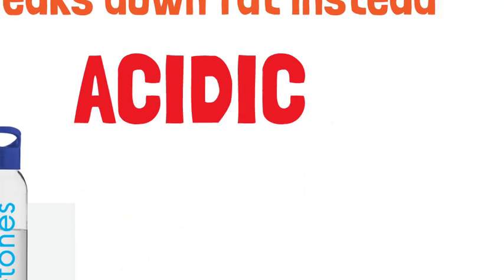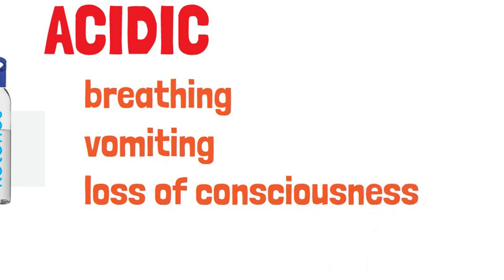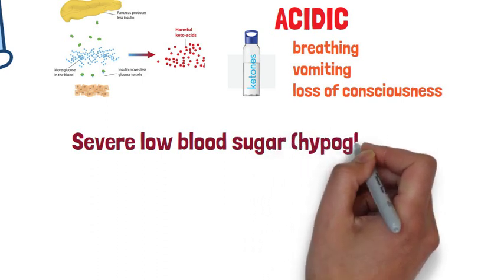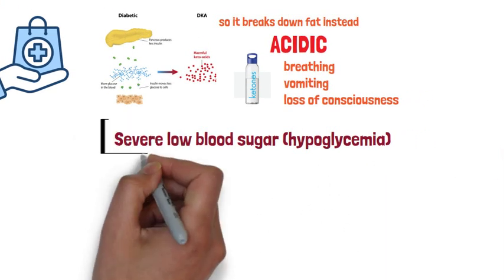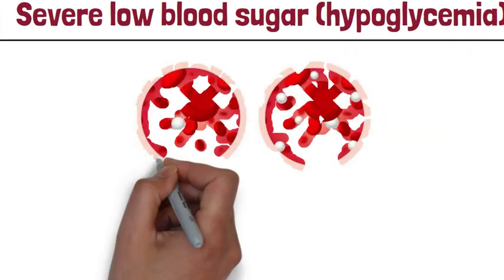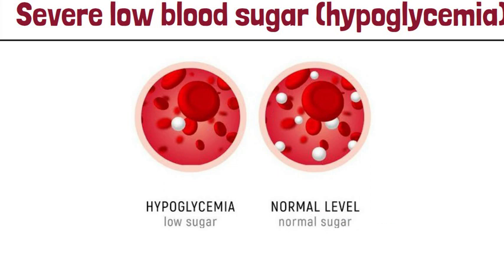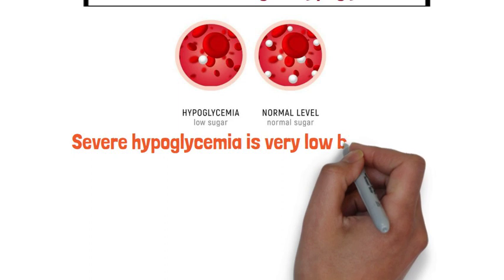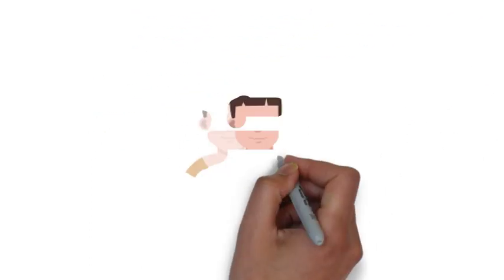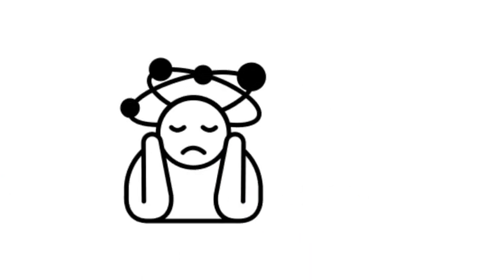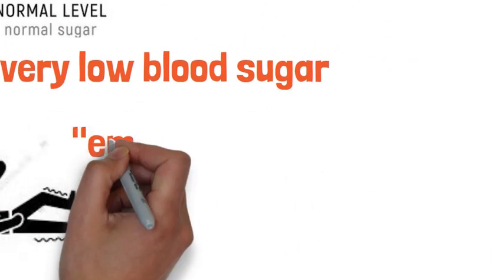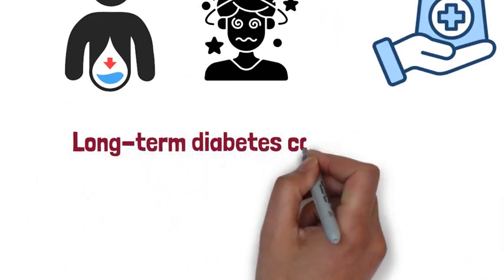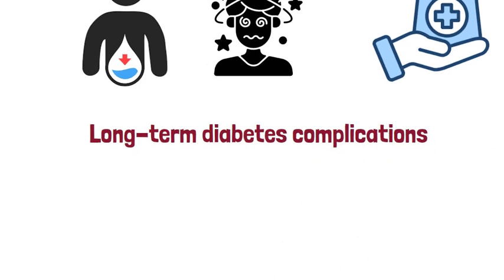This causes labored breathing, vomiting, and loss of consciousness. The third acute complication is severe hypoglycemia — very low blood sugar. It happens when your blood sugar level drops below the healthy range. It mainly affects people with diabetes who use insulin. Signs include blurred or double vision, disorientation, and seizures. It requires treatment with emergency glucagon and medical care.